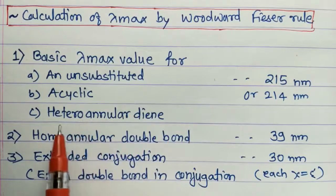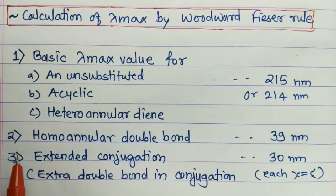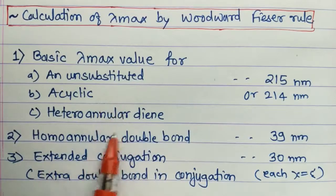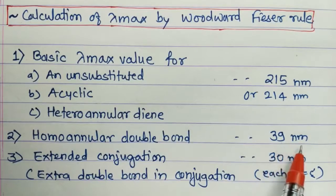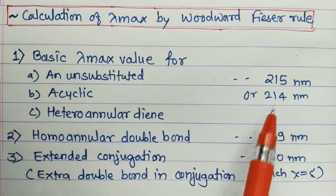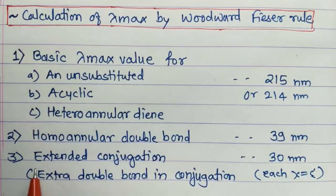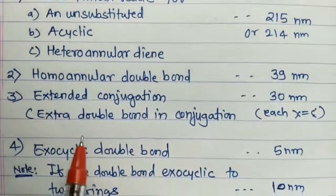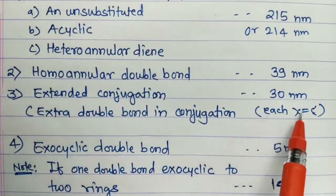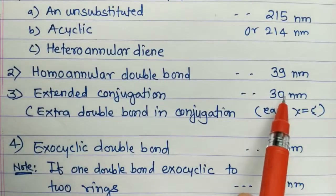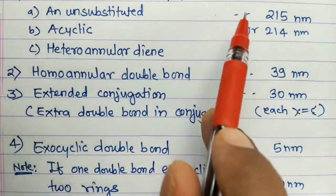Second point: if a homoannular double bond is present, you add 39 nm to the basic lambda max. Third point: if there is extended conjugation — an extra double bond in conjugation — you add 30 nm for each additional carbon-carbon double bond.